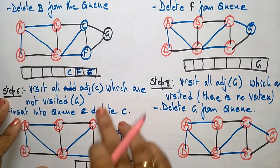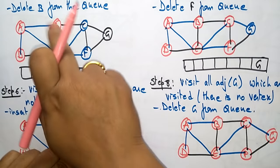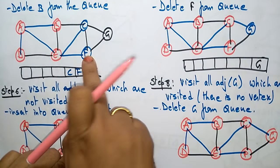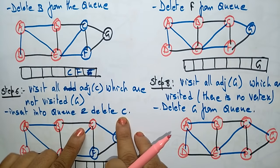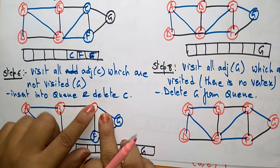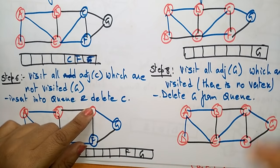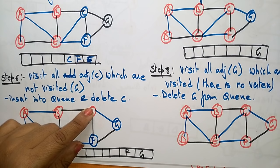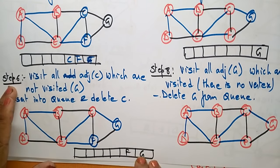Next check C. The adjacent vertices of C are E, F, G, and B. E and B are already visited and deleted. F is already visited. G has not been visited yet, so place G on the queue and delete C. If there are no unvisited adjacent vertices, delete the current vertex from the queue; if there are, also delete it after placing the new vertices.